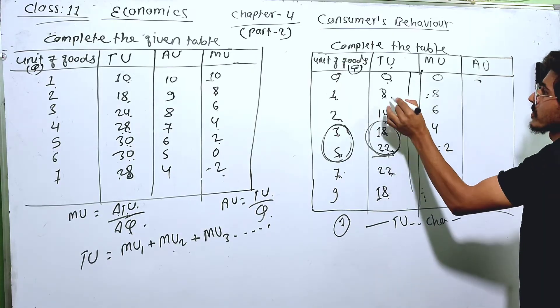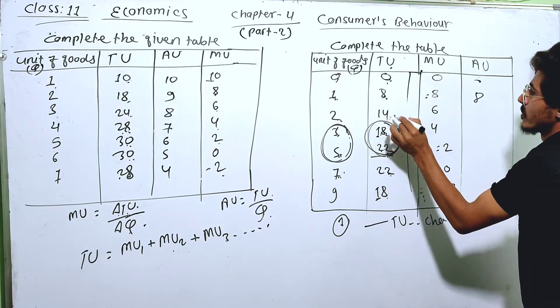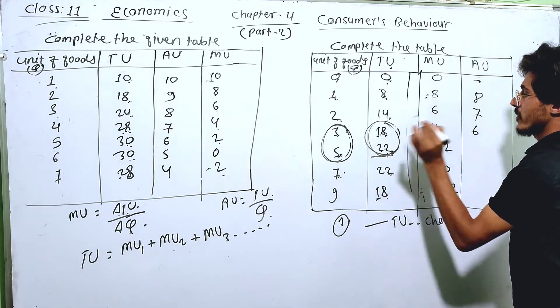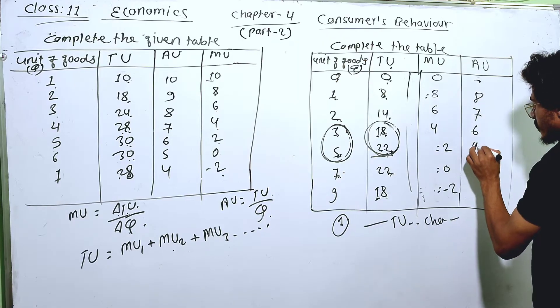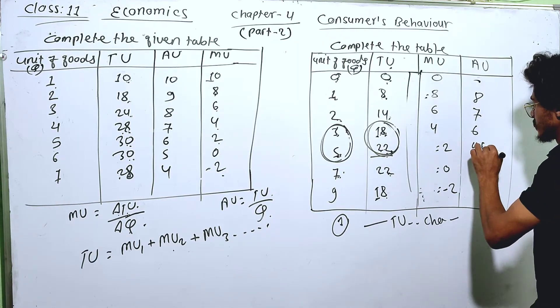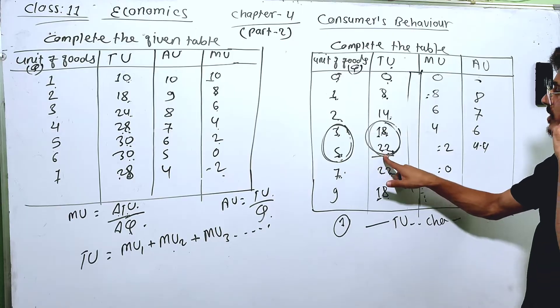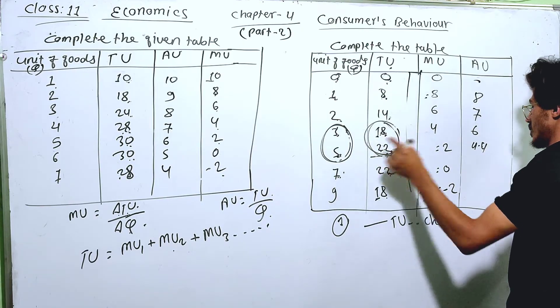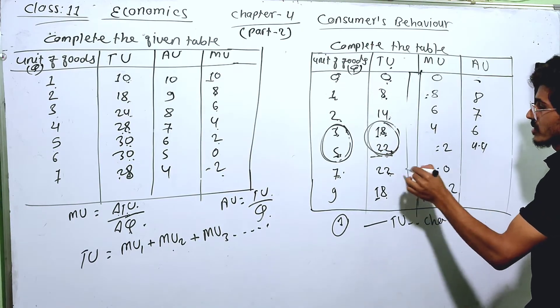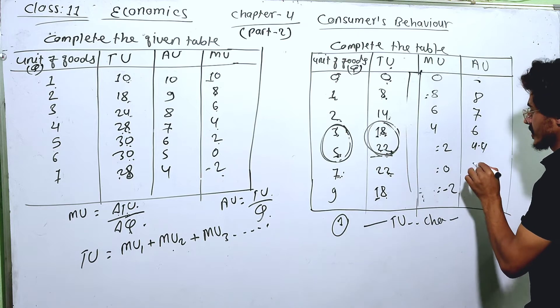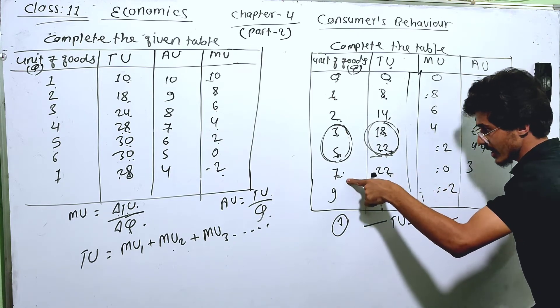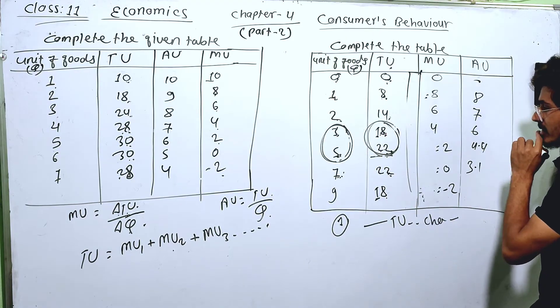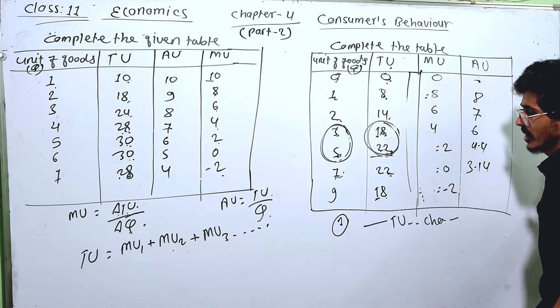TU divided by Q: 0 divided by 0. Total utility divided by quantity gives us the average utility.